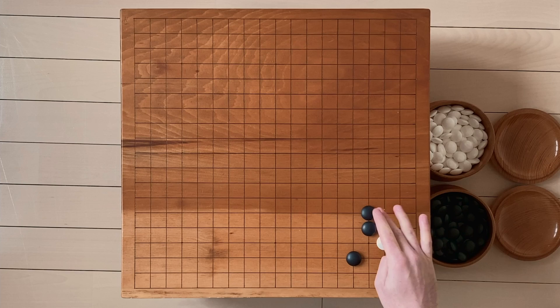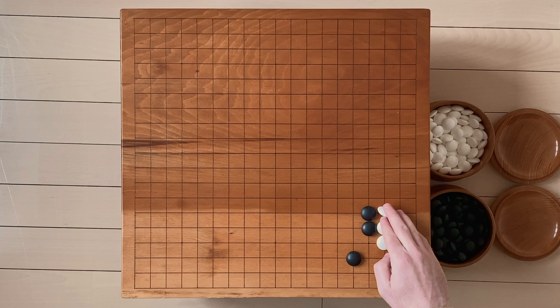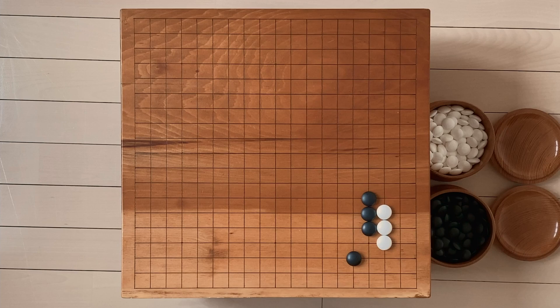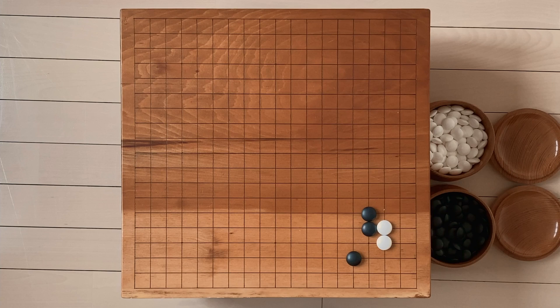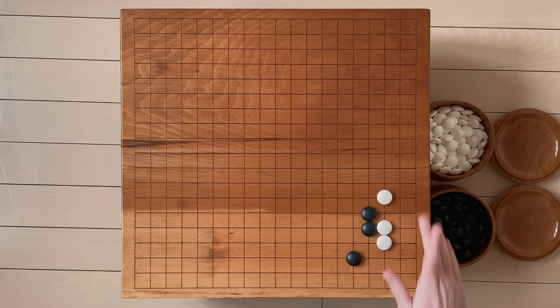And now white can keep extending, but this makes black very happy. Black is getting this nice wall on the outside. And so eventually, white is going to have to try and get ahead. And if you were white, how would you do that? Well, there are actually two correct answers. The classic one is this jump here, this one space jump. And this would be the end of the joseki.